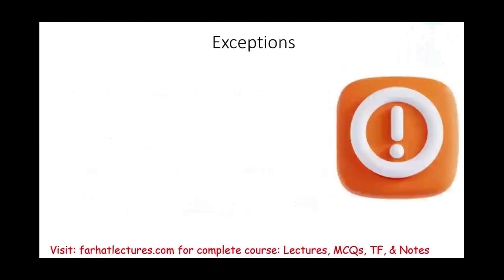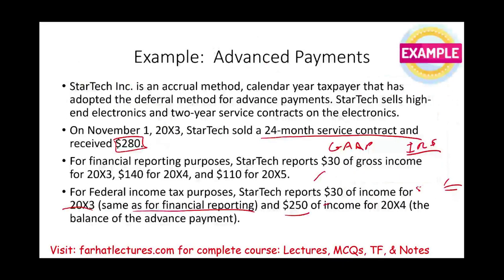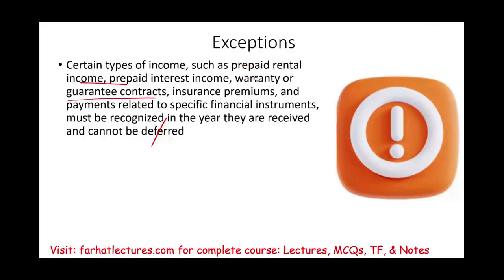There are exceptions to the prepaid deferral rule. Certain types of income — prepaid rental income, prepaid interest, warranty and guarantee contracts, insurance premiums, and payments related to financial instruments — must be recognized in the year they are received. No deferral is permitted for these. If it says prepaid rental or prepaid interest, whatever you receive that year, you report it because you have the ability to pay. When income is disputed and uncollected, no income is recognized until the dispute is resolved — prior to settlement, you don't have the right to the income yet.